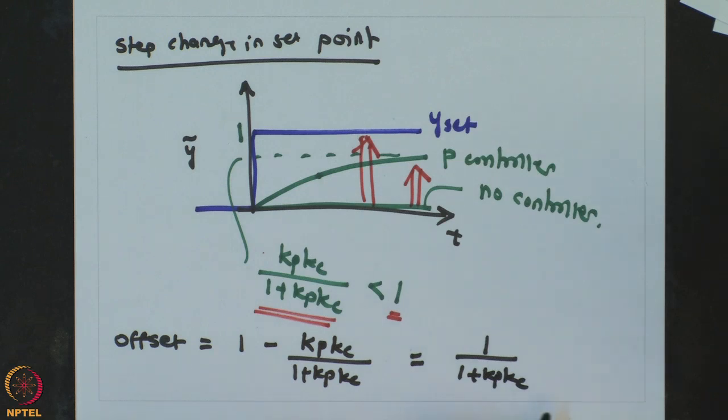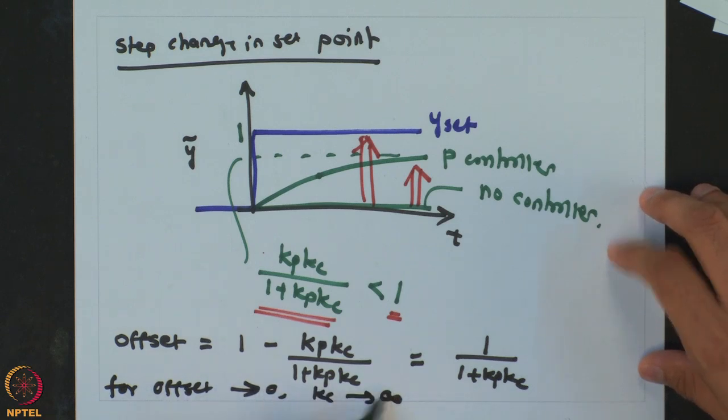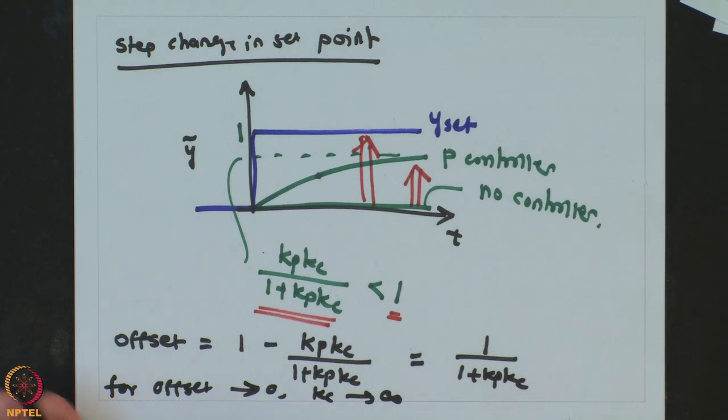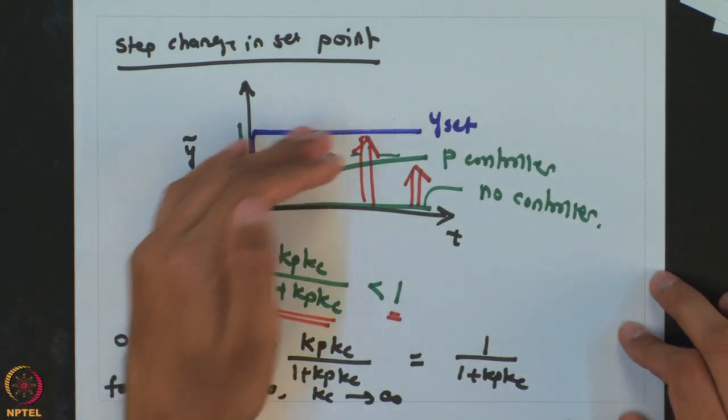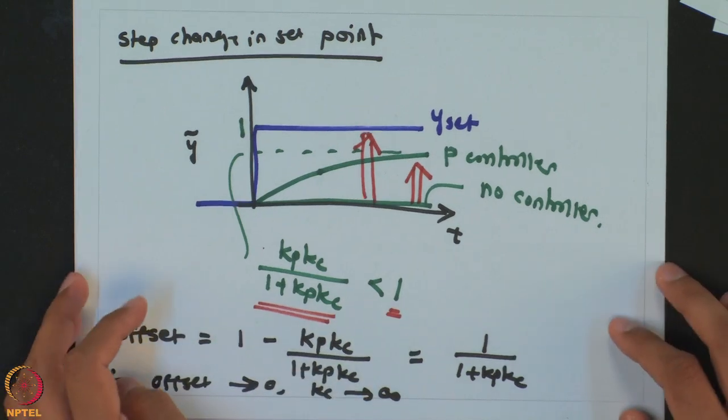For offset to go to 0 you require Kc to go to infinity, which is again mathematically possible but practically impossible. In the servo problem the proportional controller moves the process toward the set point but fails to reach the desired final value — it comes short. The only thing of interest is that it is moving the process in the desired direction. To improve this and get offset equal to 0 with a finite controller gain, what we need is an additional controller action: the integral action. We will see how addition of integral action will help achieve zero offset even for finite values of controller gain.